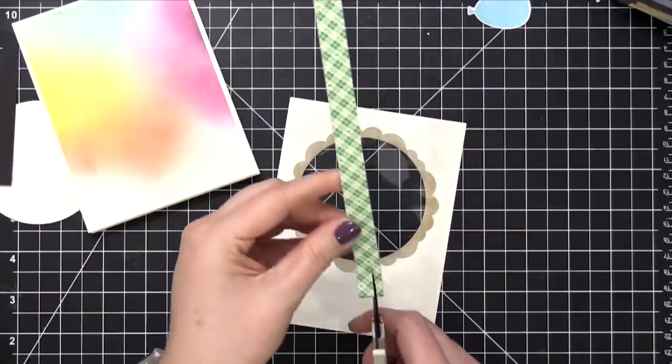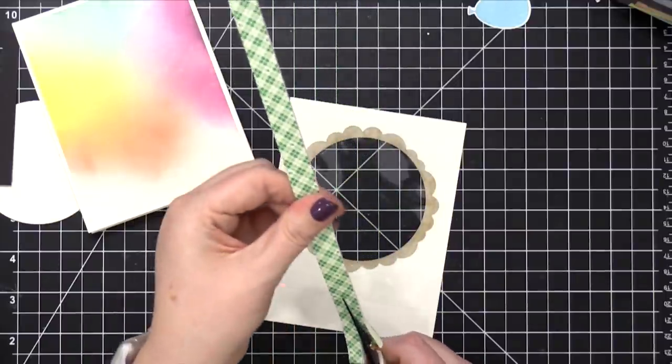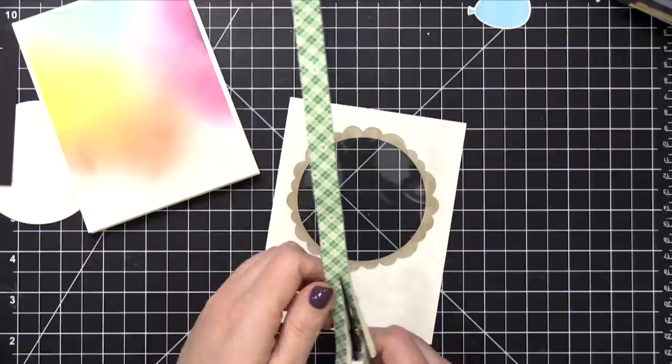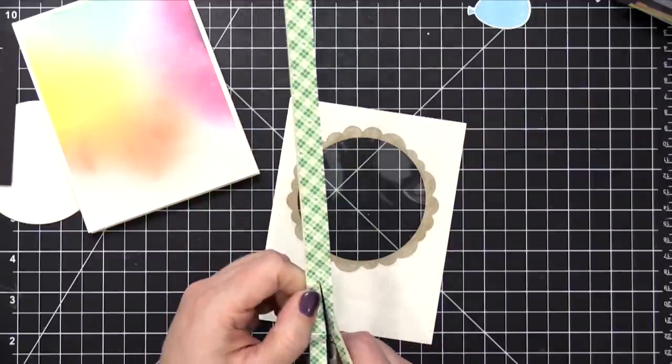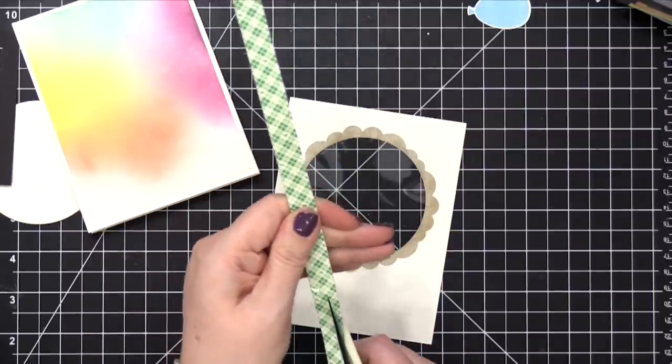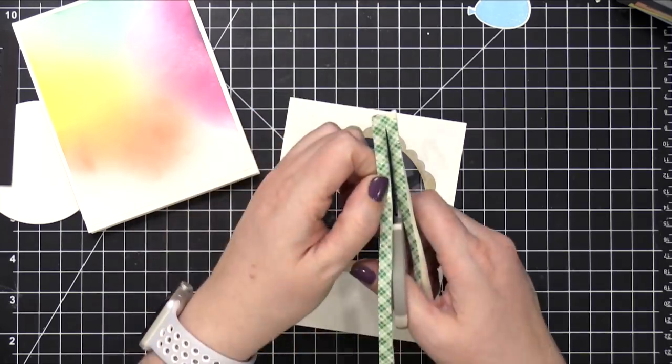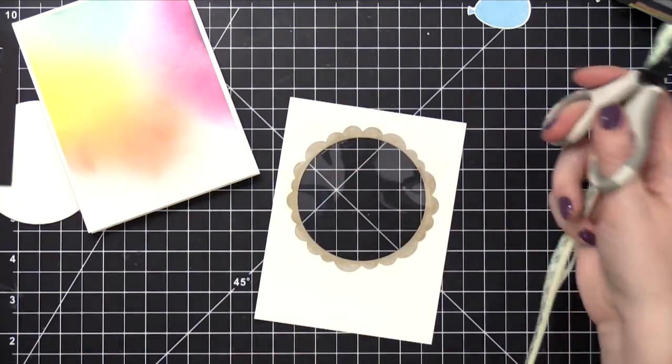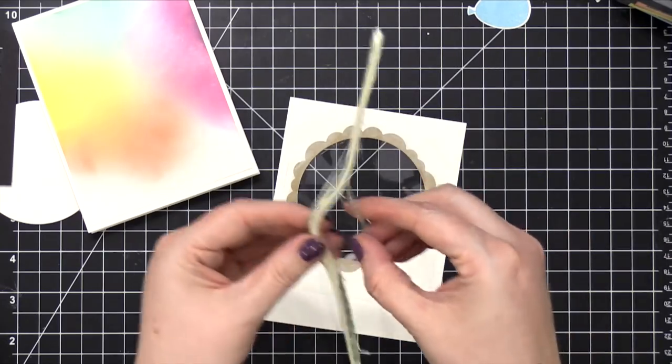Then I'm gonna take my scissors and trim it down so it's a little bit more narrow. This just makes it a little bit easier to manipulate and kind of curve around that circle shape. So I'm using some scissors and cutting this down.